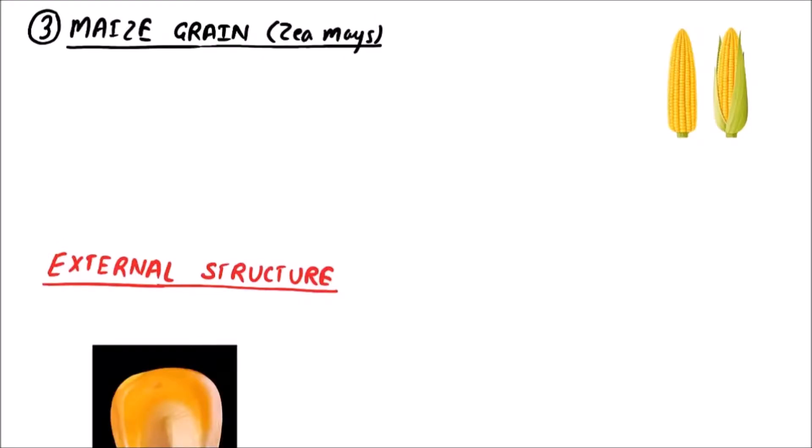Welcome to Studio Biology. In this video we are going to discuss the structure of maize grain. Maize is Zea mays. It is a single-seeded fruit that is karyopsis.